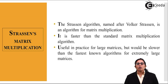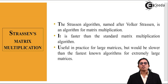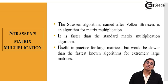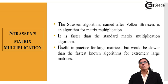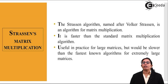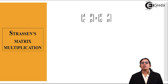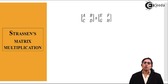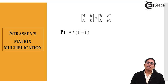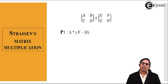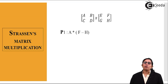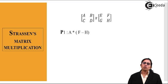Strassen's algorithm is useful for large matrices but would be slower than the fastest known algorithms for extremely large matrices — it works best for middle-sized matrices. For a 2x2 example, rather than a simple matrix multiplication, we divide the computation into seven sub-products termed P1 through P7.